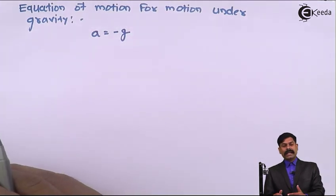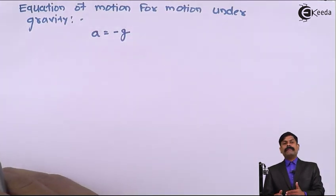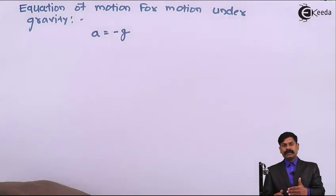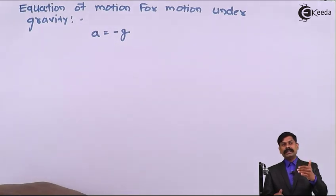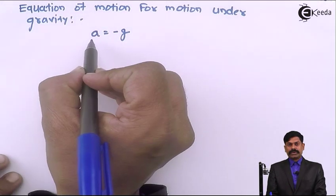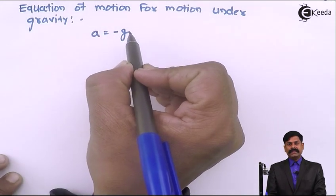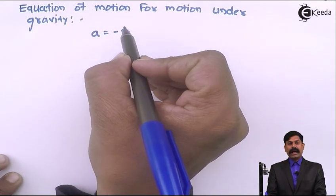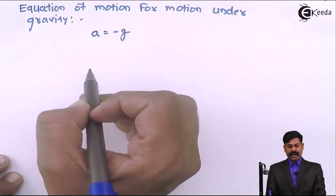Sometimes a particle is following a linear motion but along the y axis with negative acceleration. So a equals to minus g over here, where g is the acceleration due to gravity.